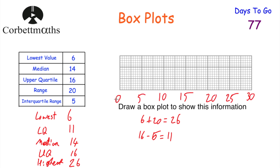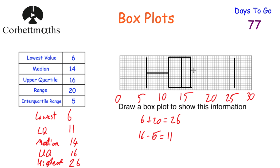So now we know all five values and we can draw a box plot. The scale I chose horizontally was from zero to 30, going up in fives. Drawing five lines: the lowest value is six, two little boxes after five; the lower quartile is 11, two little boxes after ten; the median is 14, two little boxes before 15; the upper quartile is at 16; and the highest value at 26. Then we draw a box around the middle 50% of the data — around the upper quartile and lower quartile — and connect that up to the lowest value and to the highest value with whiskers. And that's our box plot.